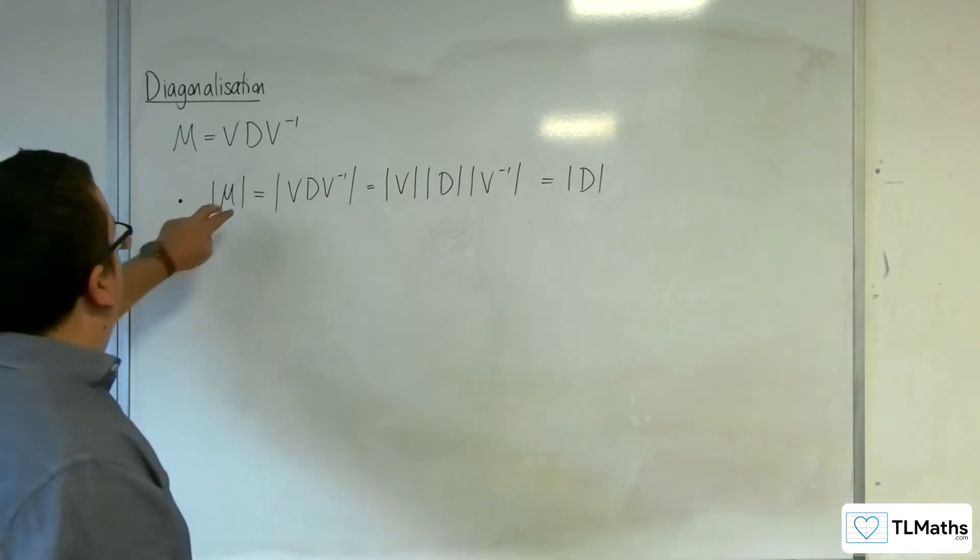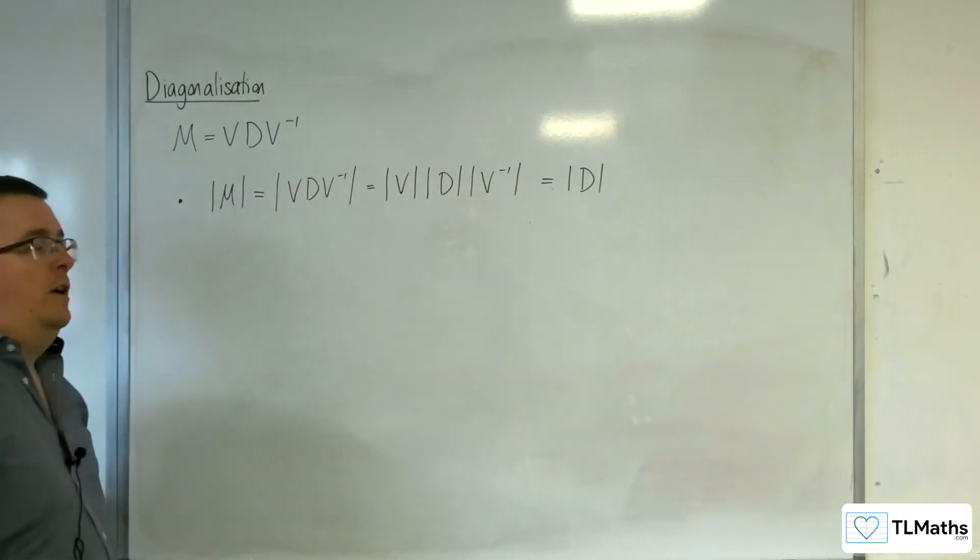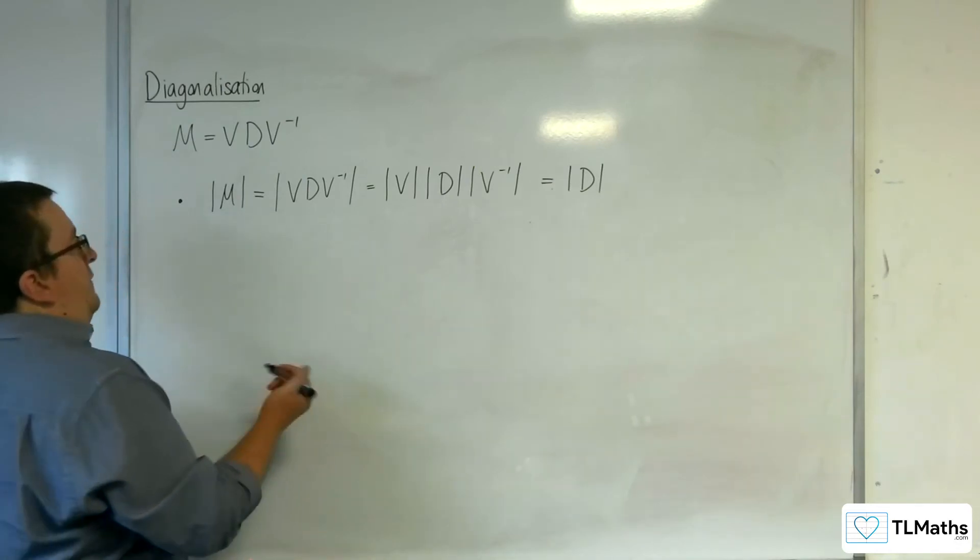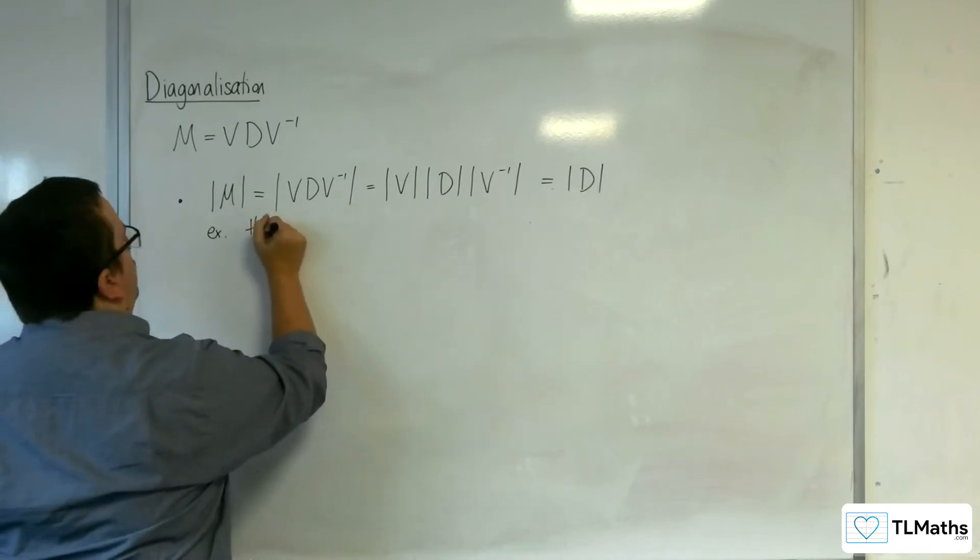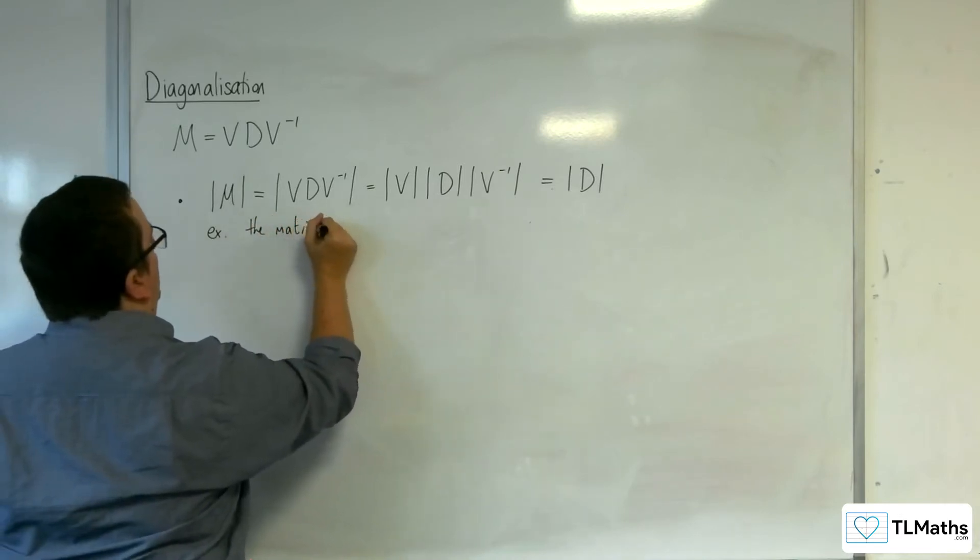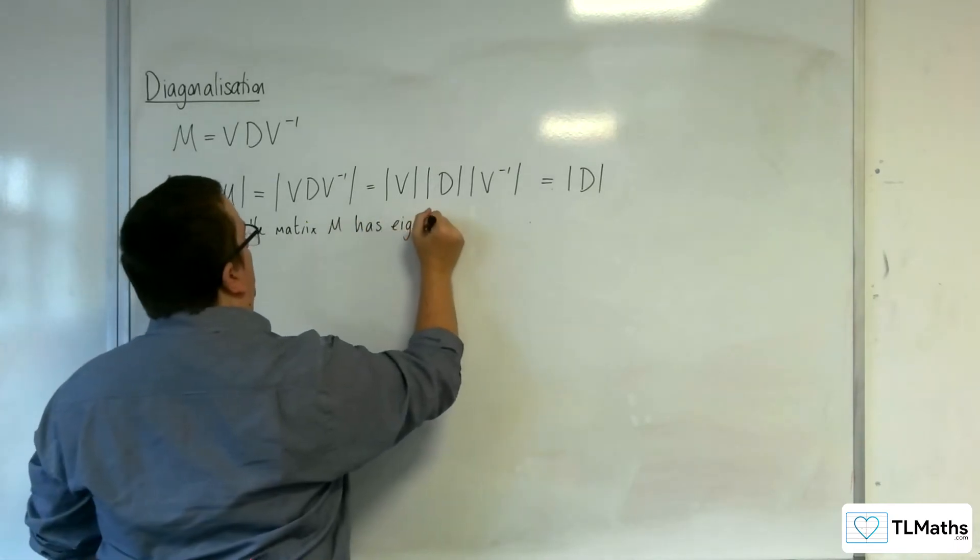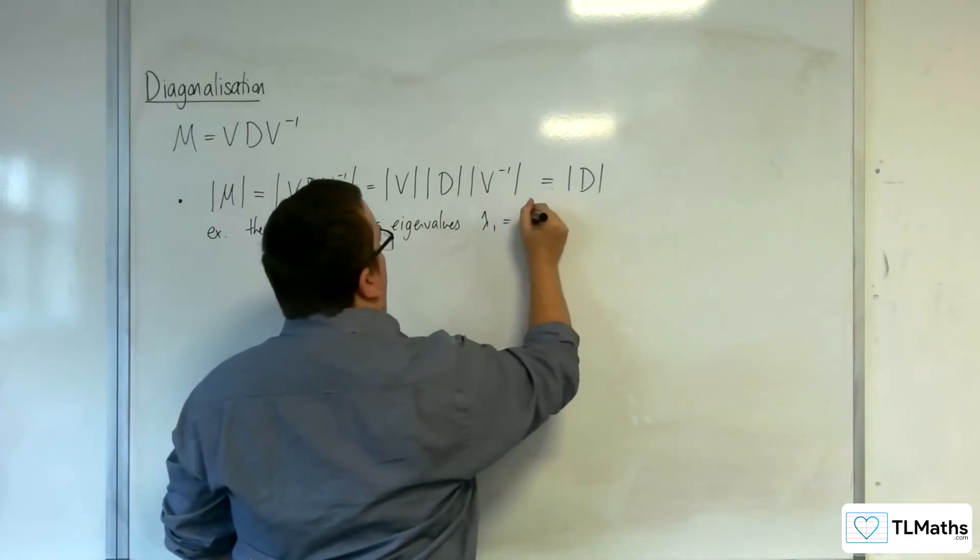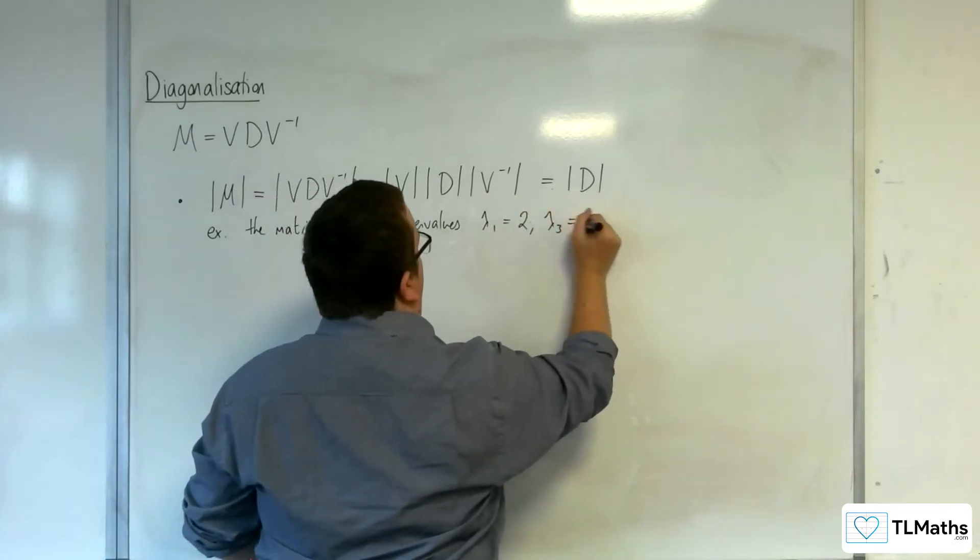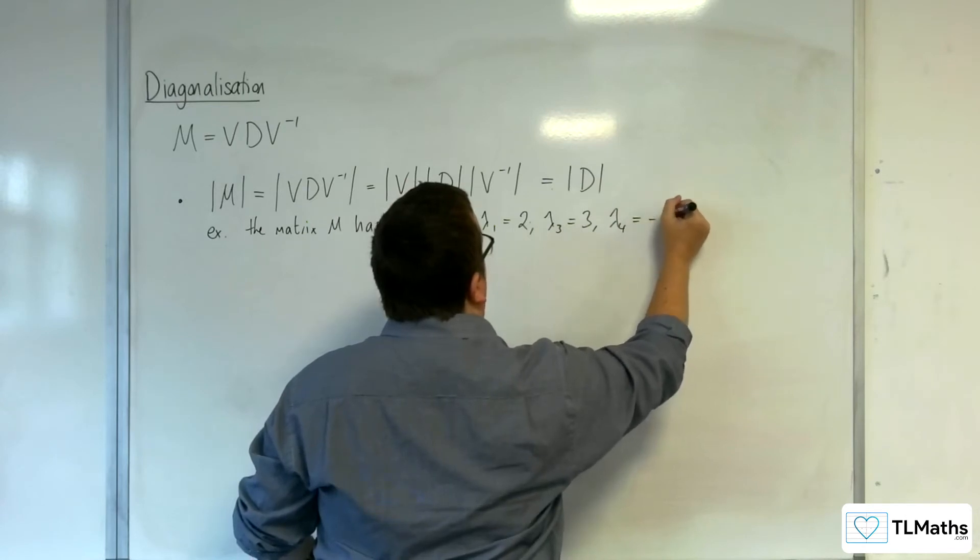So actually, the determinant of M is the same as the determinant of the diagonal matrix. For example, if the matrix M has eigenvalues lambda 1 equals 2, lambda 3 equals 3, and lambda 4 is equal to minus 4.